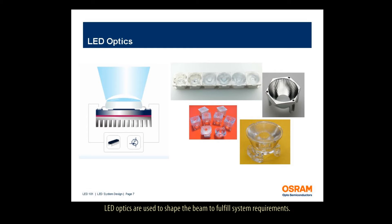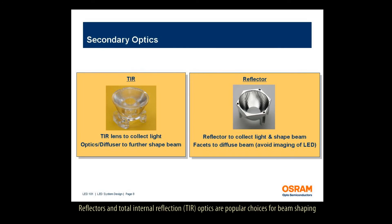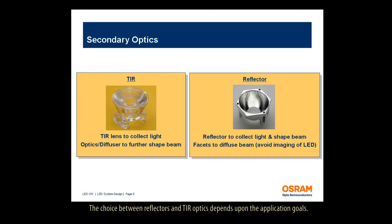LED optics are used to shape the beam to fulfill system requirements. Optics can be primary lenses mounted directly on the LED, or secondary optics placed above the LED package. Reflectors and total internal reflection, or TIR optics, are popular choices for beam shaping due to their high efficiencies, often around 85%. The choice between reflectors and TIR optics depends upon the application goals.